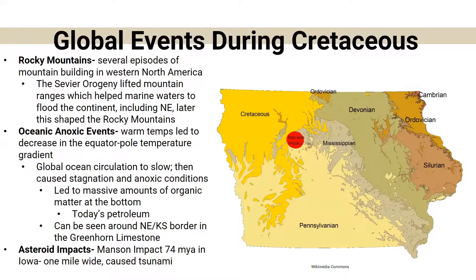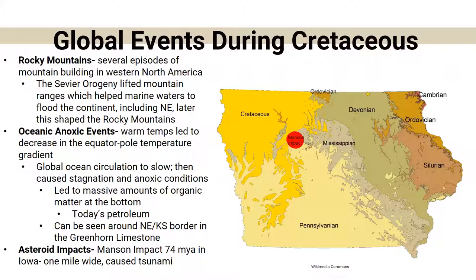Some global events during the Cretaceous: the Rocky Mountains were beginning to form, and marine water basically flooded the continent including Nebraska. There were also anoxic events — stagnation in the water where material wasn't circulating — leading to a large amount of organic matter settling at the bottom of the ocean. That organic matter is today's petroleum. You can find evidence of those anoxic events in the greenhorn limestone near the Nebraska-Kansas border.